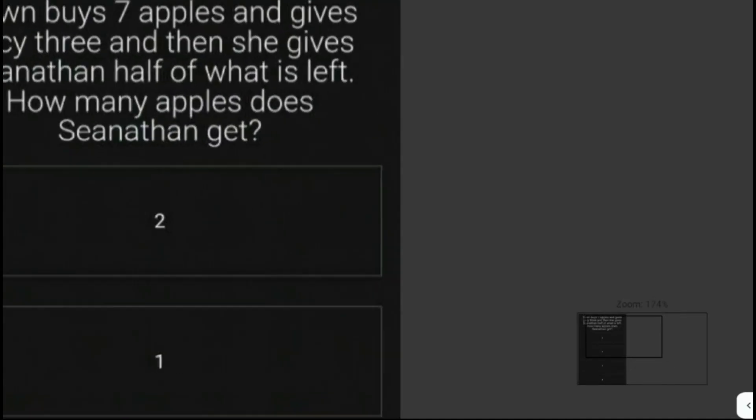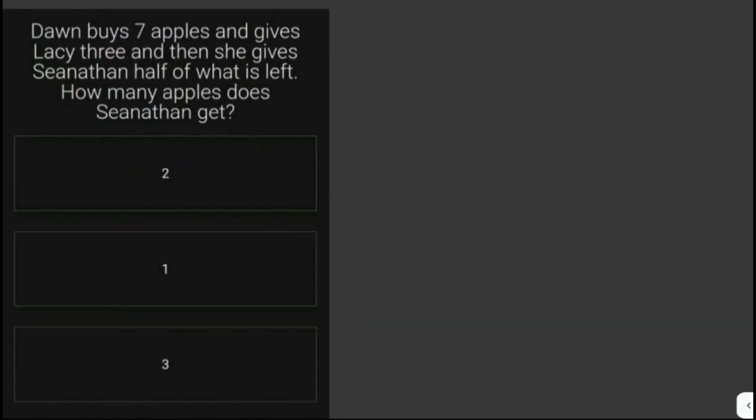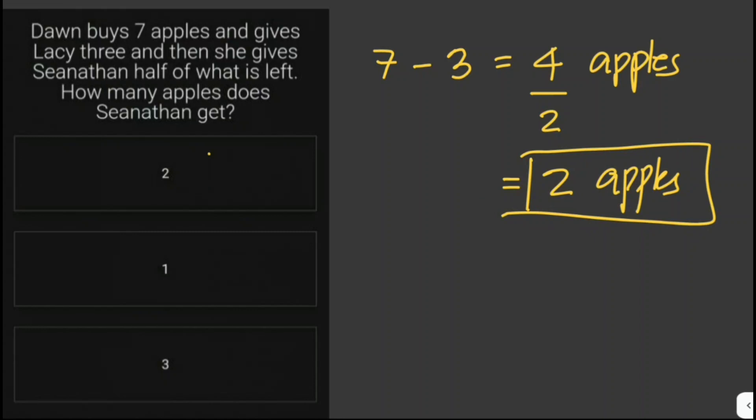Dawn buys 7 apples and gives Lacey 3, and then she gives Nathan half of what is left. How many apples does Nathan get? So originally, Dawn has 7 apples and then gives 3 to Lacey. So she's got 4 apples left, and she gives half of what is left. So half of this, 4 divided by 2, is just equal to 2. So Nathan gets 2 apples.